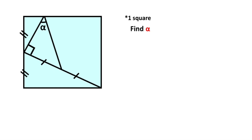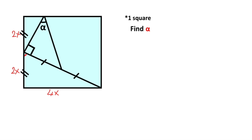In this video we have one square and these two points are given as midpoints. These two parts and these two parts are equal, and here is given 90 degrees and angle alpha is x. First of all, this side I'm going to represent with 2x, so here must be equal 2x. We know that a square has four equal sides, so this side must be equal 4x. Then this angle I want to represent with theta.